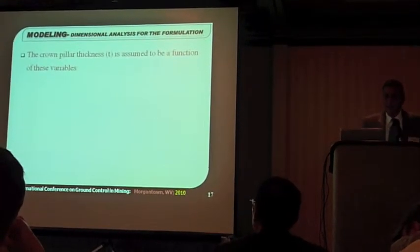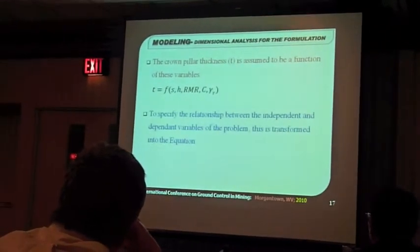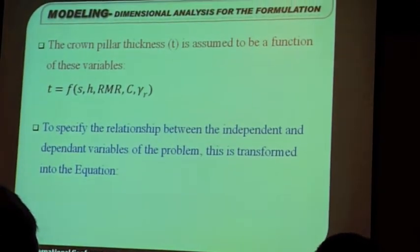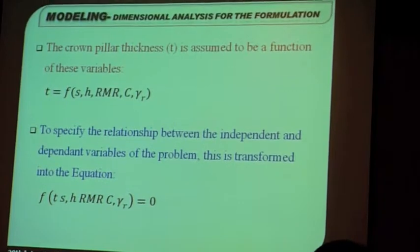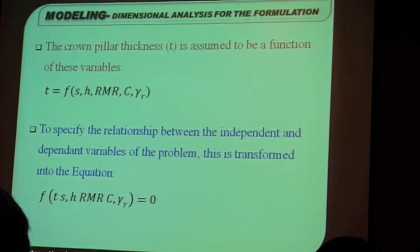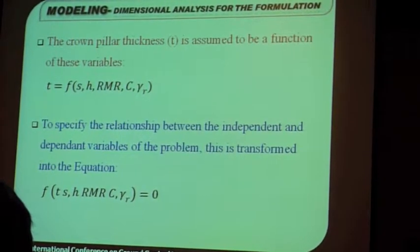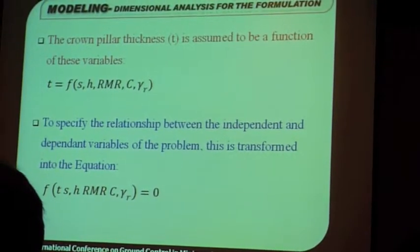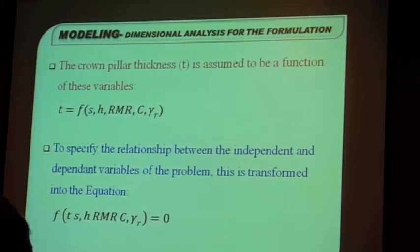The crown pillar thickness is assumed to be a function of these variables. Since we decided that these five variables are going to be the determinants of our crown pillar thickness. Therefore, the thickness T is a function of S, H, RMR, C, and gamma bar. And to specify the relationship between the dependent and independent variables of the problem, this is transformed into the equation. Very simple function of T, S, H, RMR, C, and gamma bar is equal to zero.